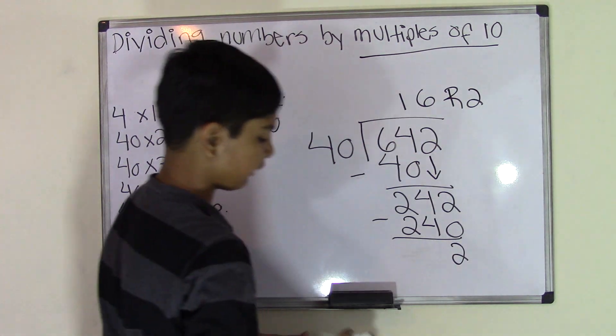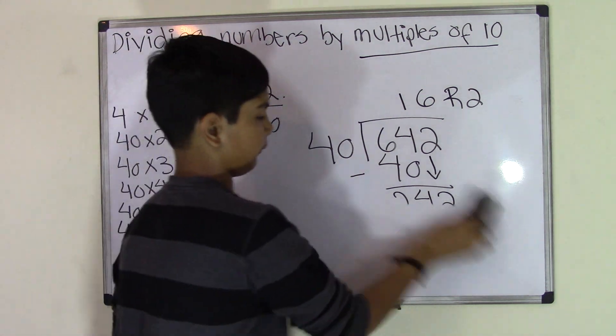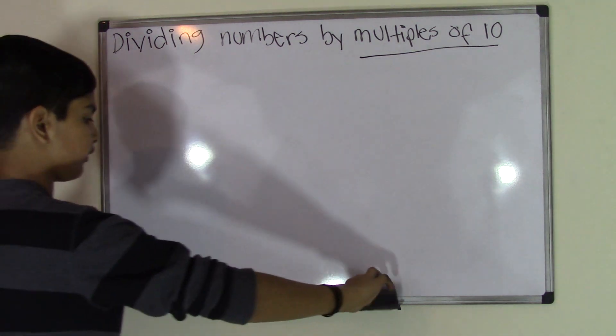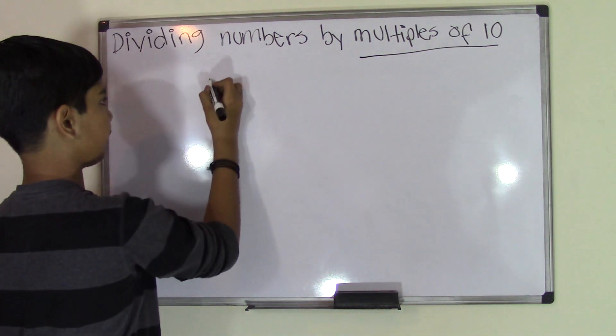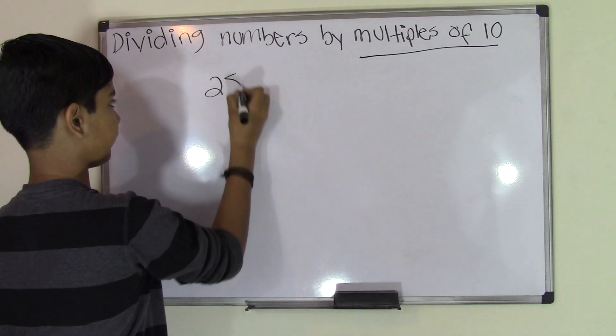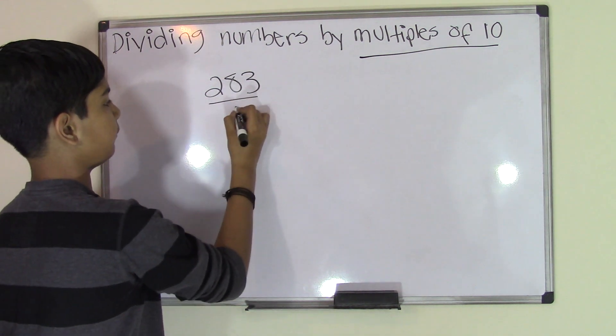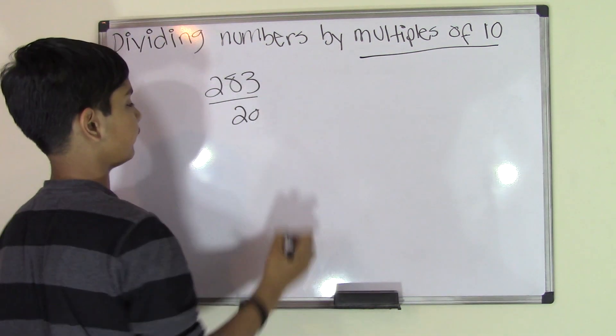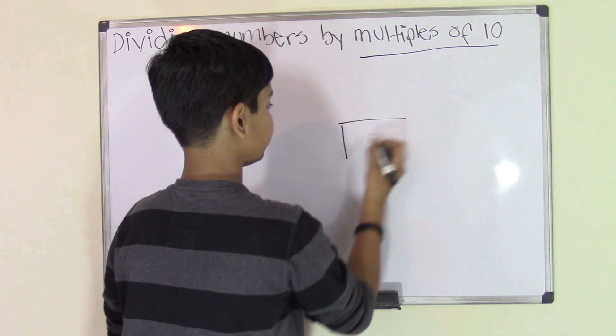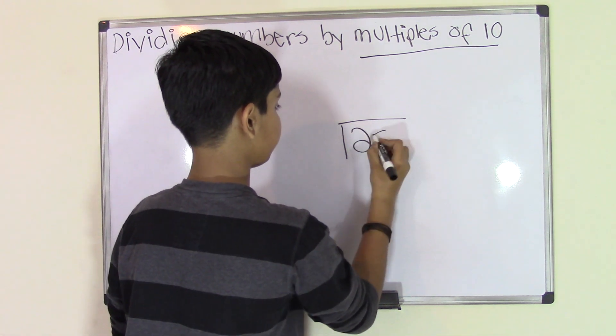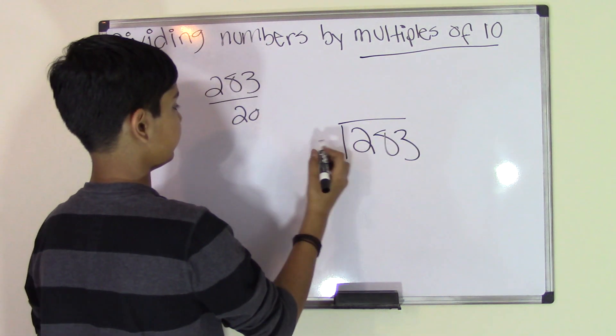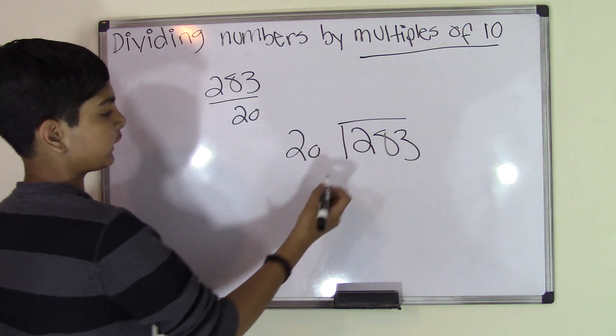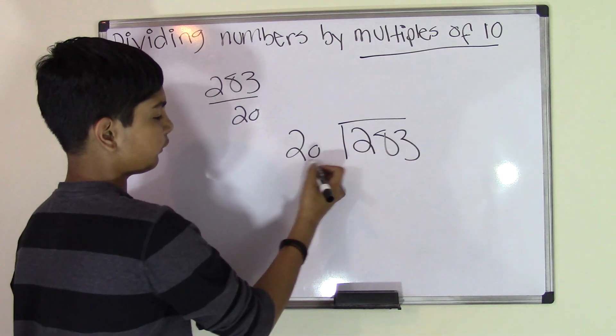Let's do another example. This time we have 283 divided by 20. Let's write this in division form. We write 283, the dividend, and 20, the divisor. Now we divide.